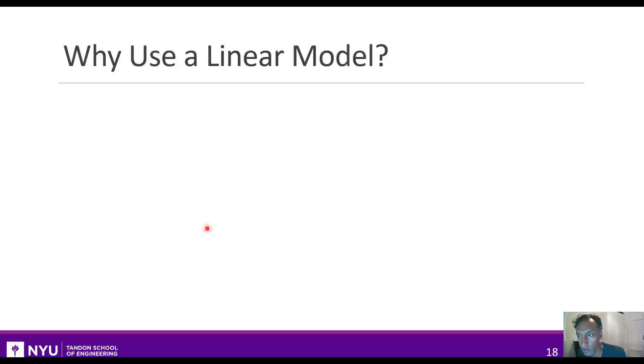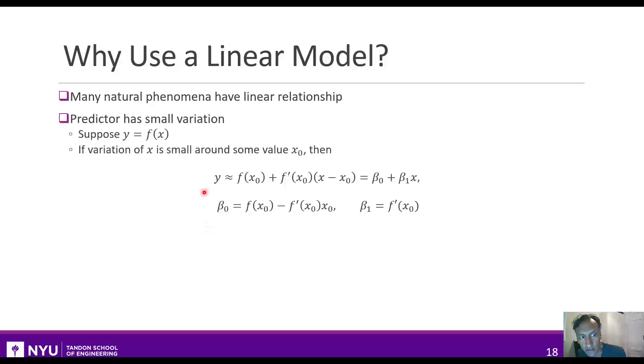You might ask why would you want to use a linear model at all? The reality is that many natural phenomena have a linear relationship. Most commonly, it occurs from this: suppose that the target variable y is some possibly even nonlinear function of x. But if the variation of x is small around some nominal value, then you can apply calculus to take a linear approximation of that function. Once you take a linear approximation, you'll see that y is a linear function of those variables.